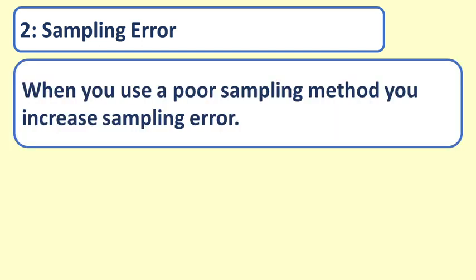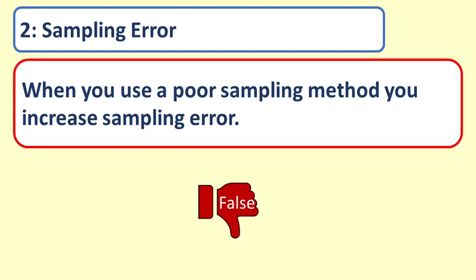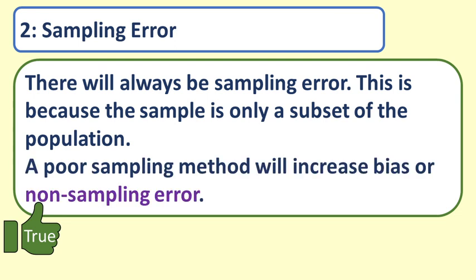Question 2: Sampling error. When you use a poor sampling method, you increase sampling error. Answer: False. There will always be sampling error, because the sample is only a subset of the population. A poor sampling method will increase bias or non-sampling error.